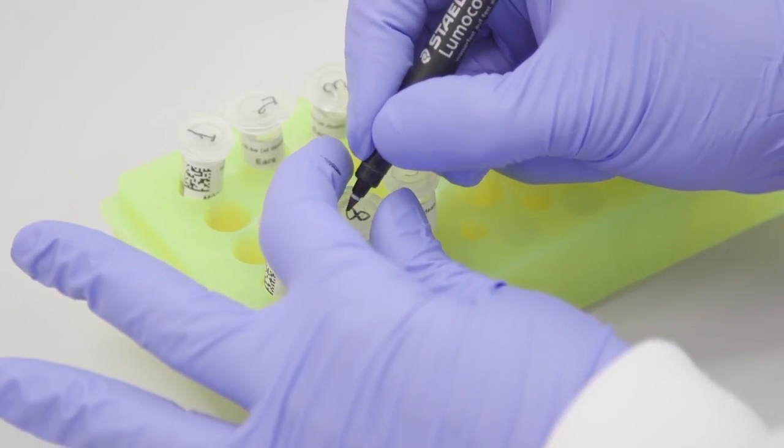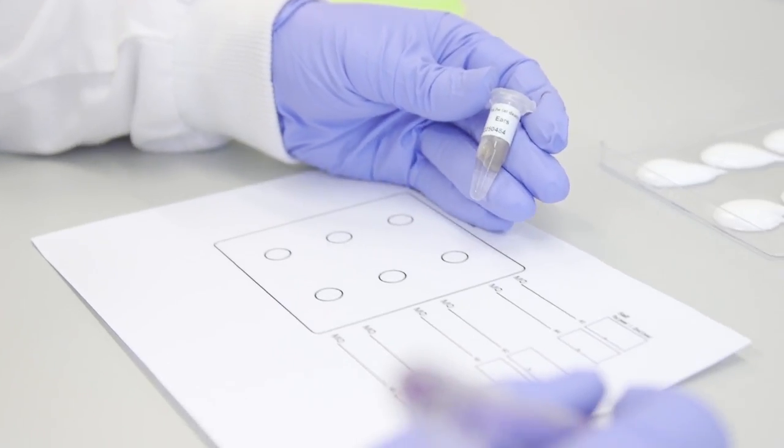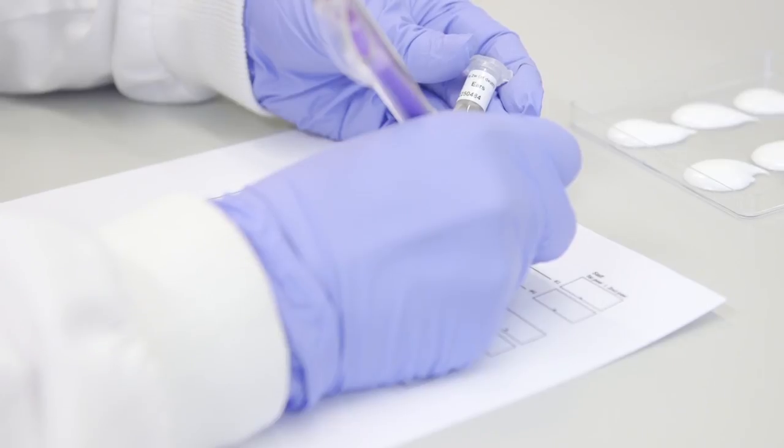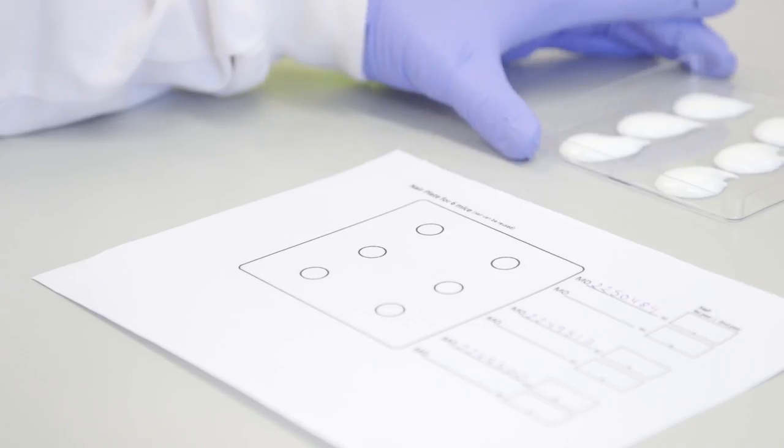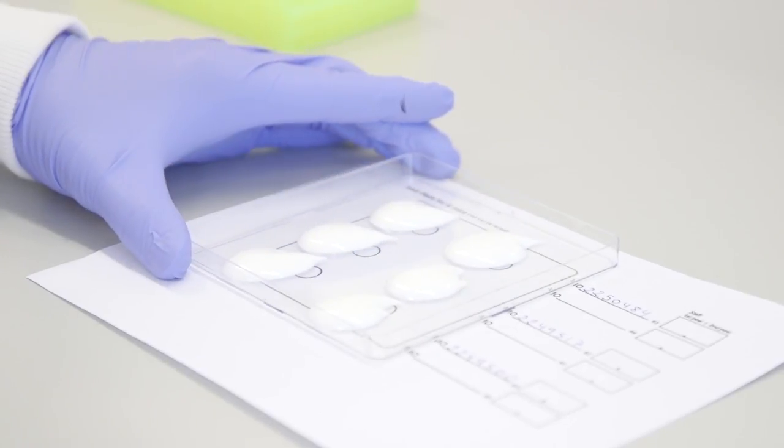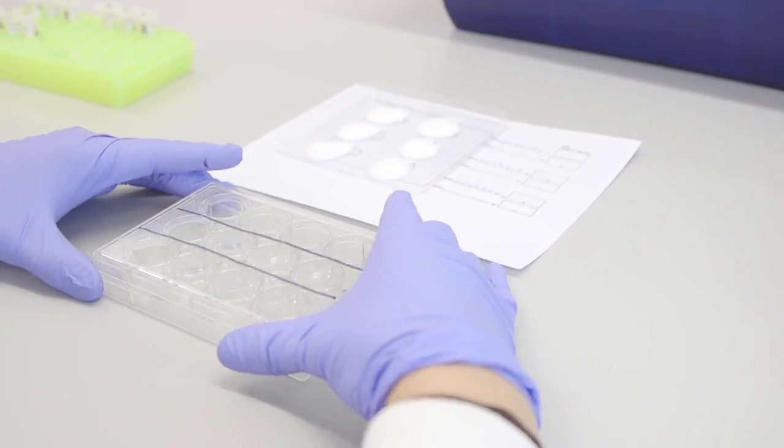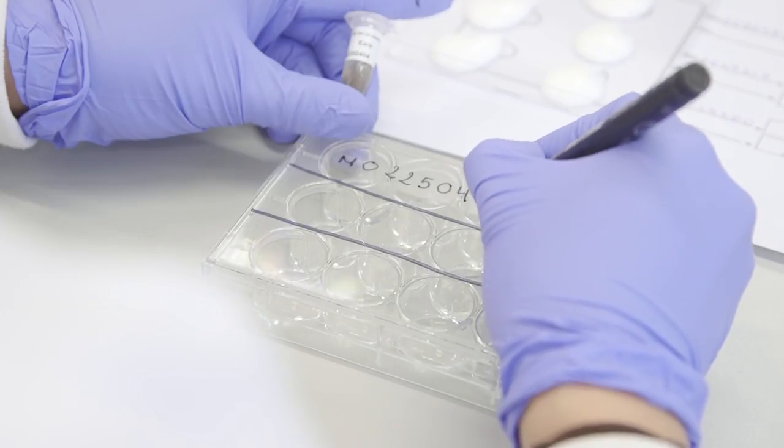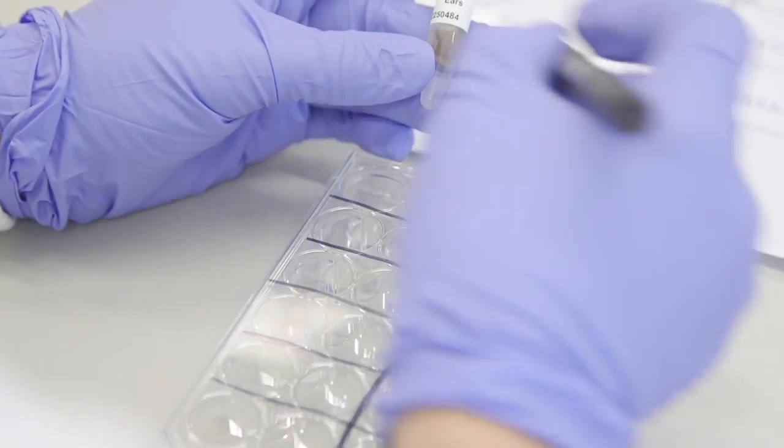Assign a tube to each row of hair removal cream and write down the ID number of the sample. Because the ears will be removed from the tube, accurate identification is essential. After doing this, write the ID numbers onto the rows of the 12-well plate. Also write the ID numbers onto the 24-well plate.